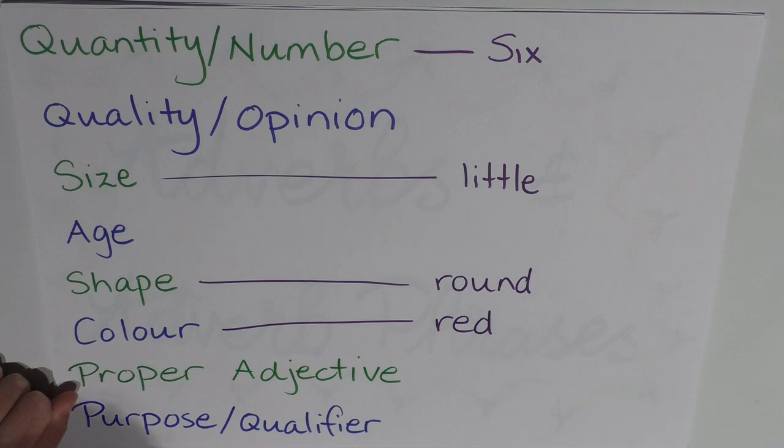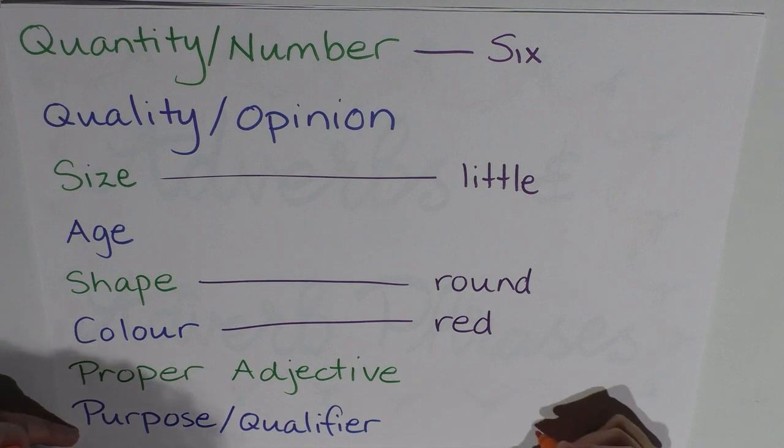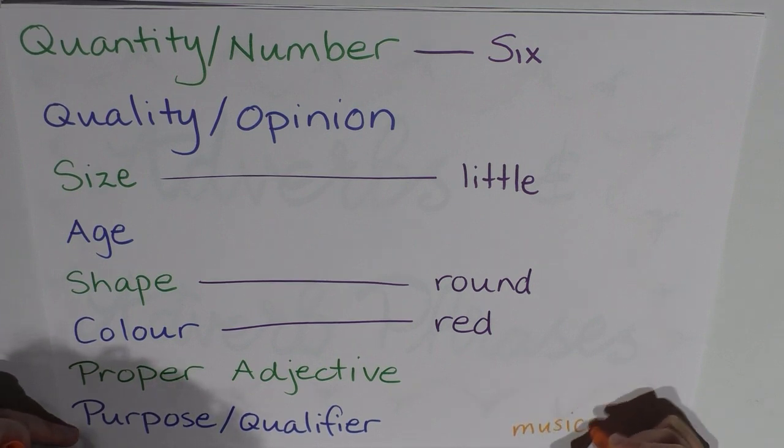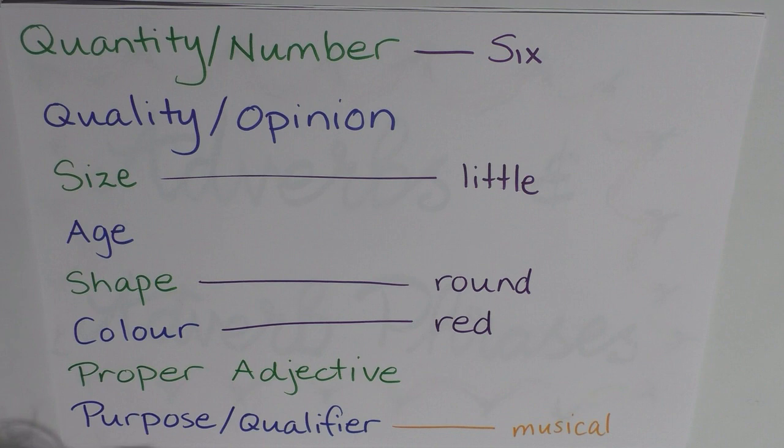Okay, what's an example of a purpose or qualifier? Perhaps, like I said, a musical. So not a musical, the noun musical, but perhaps musical being like musical genius. So Gershwin was a musical genius. In that instance, musical is the purpose or qualifier of the genius in that situation. Or a musical score, musical notation, stuff like that.